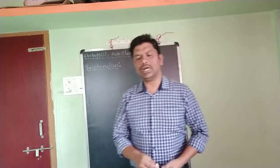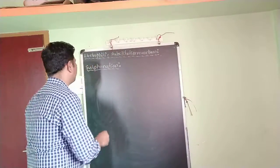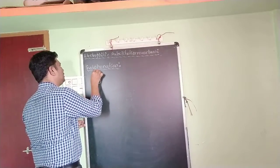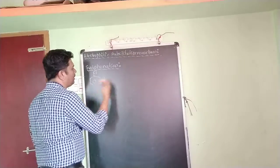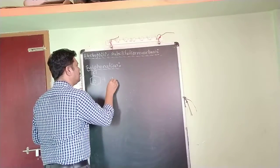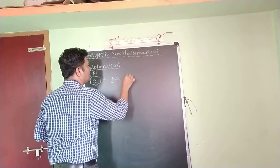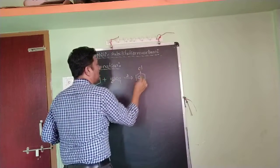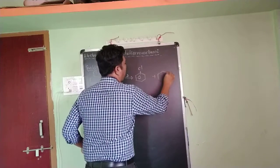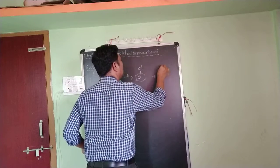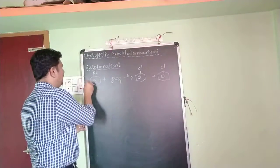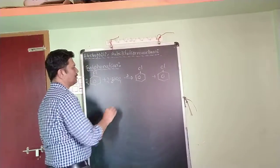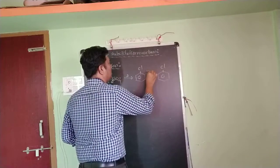I'll take a chlorobenzene — when it is heated with concentrated H2SO4, it gives a mixture of ortho and para chlorobenzene sulfonic acids. I'll take two molecules of chlorobenzene and two molecules of H2SO4. The generated electrophile is SO3H.